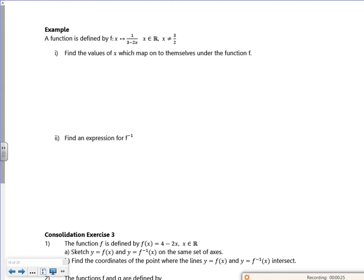Right, so I've got a function 1 over 3 minus 2x, where x can't be 3 over 2 because if I put 3 over 2 in the bottom, I get a divide by 0. So it says find the values of x which map onto themselves under the function f.